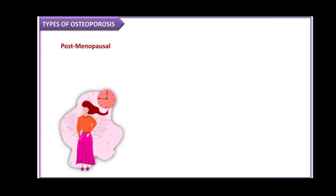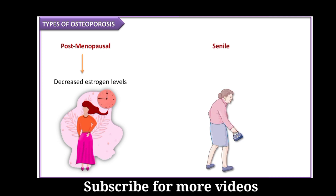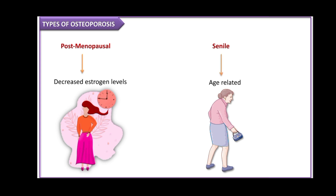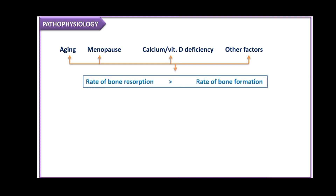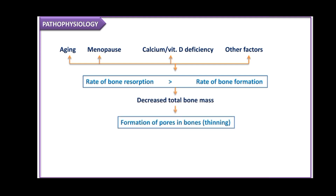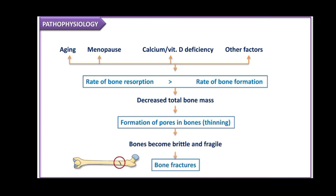Types of osteoporosis include post-menopausal osteoporosis, caused by decreased estrogen levels, and the senile type, which is due to aging and affects both men and women. Regarding pathophysiology: aging, menopause, calcium and vitamin D deficiency, and other factors lead to increased bone resorption and reduced bone formation, causing decreased total bone mass. This leads to the formation of pores in bones, making them thinner, brittle, and fragile, which can ultimately cause fractures.